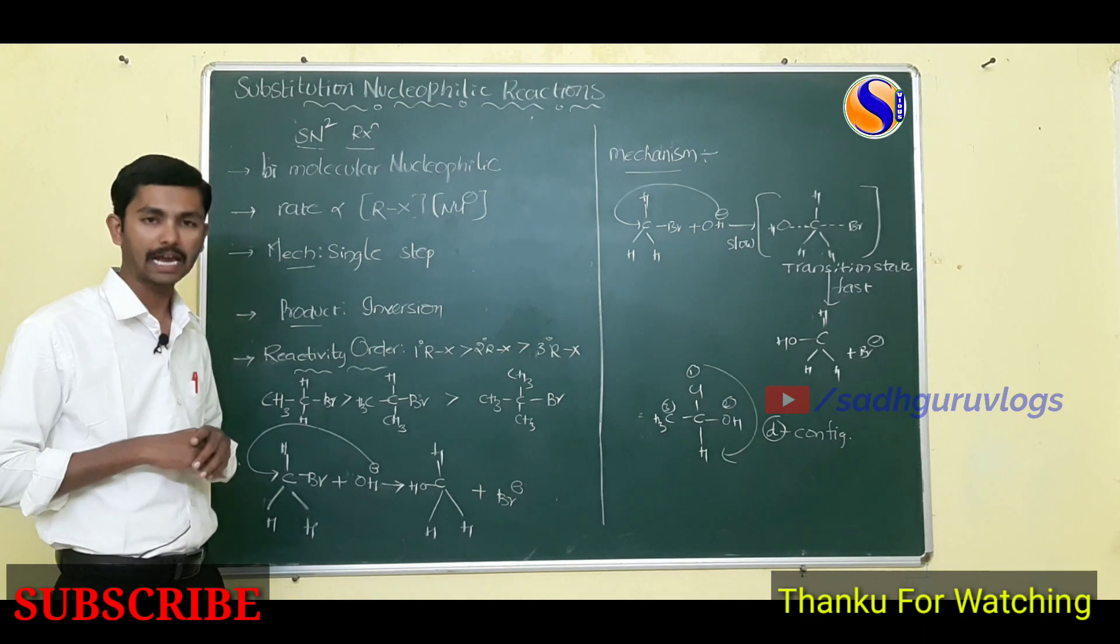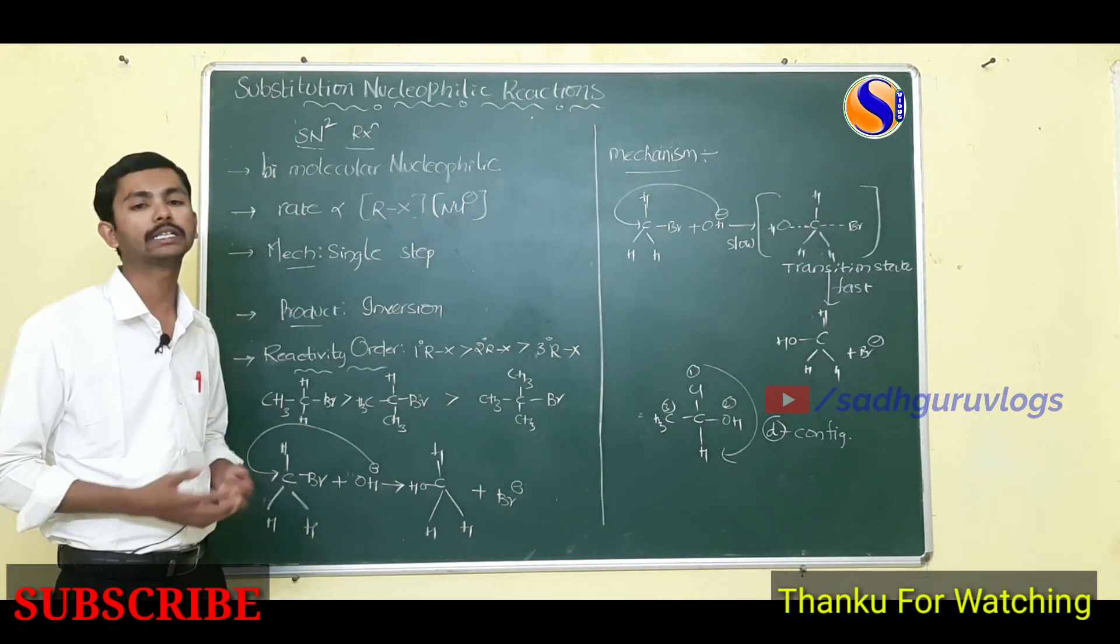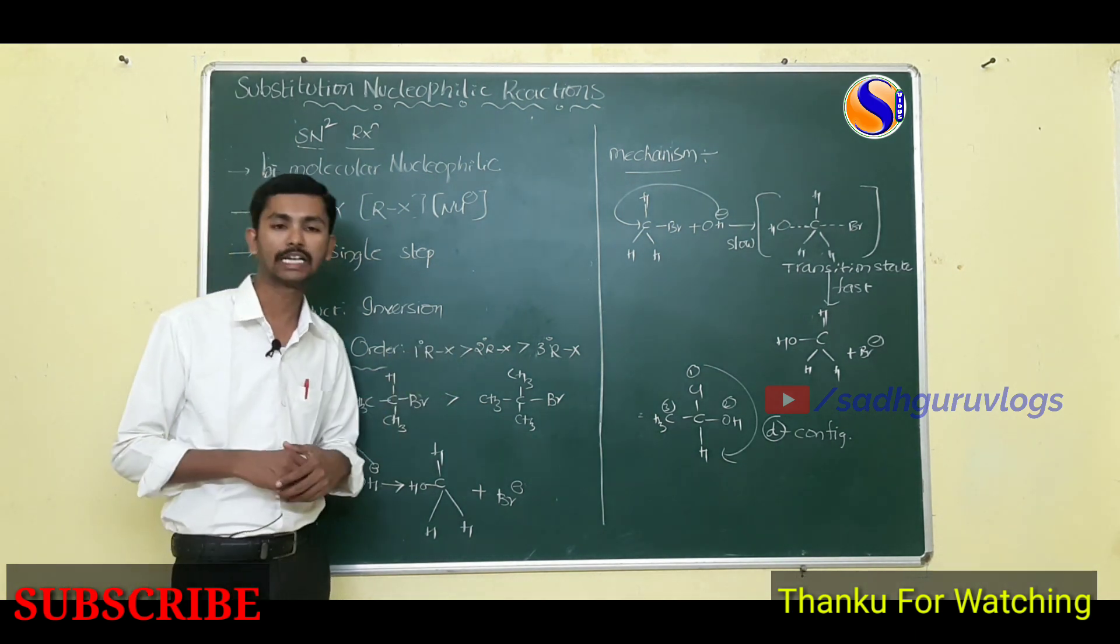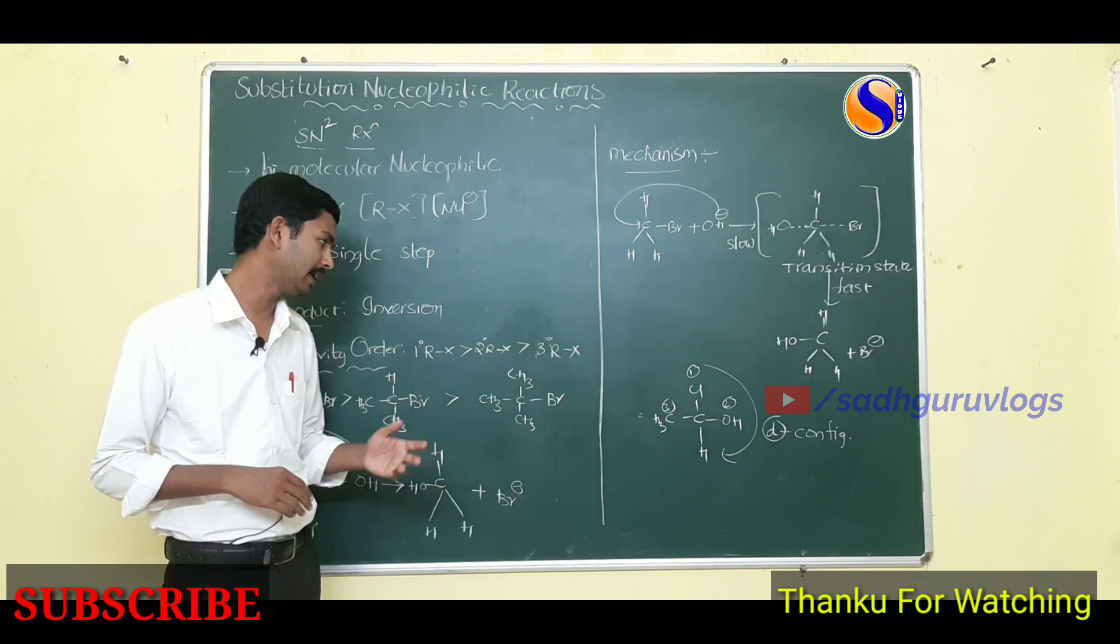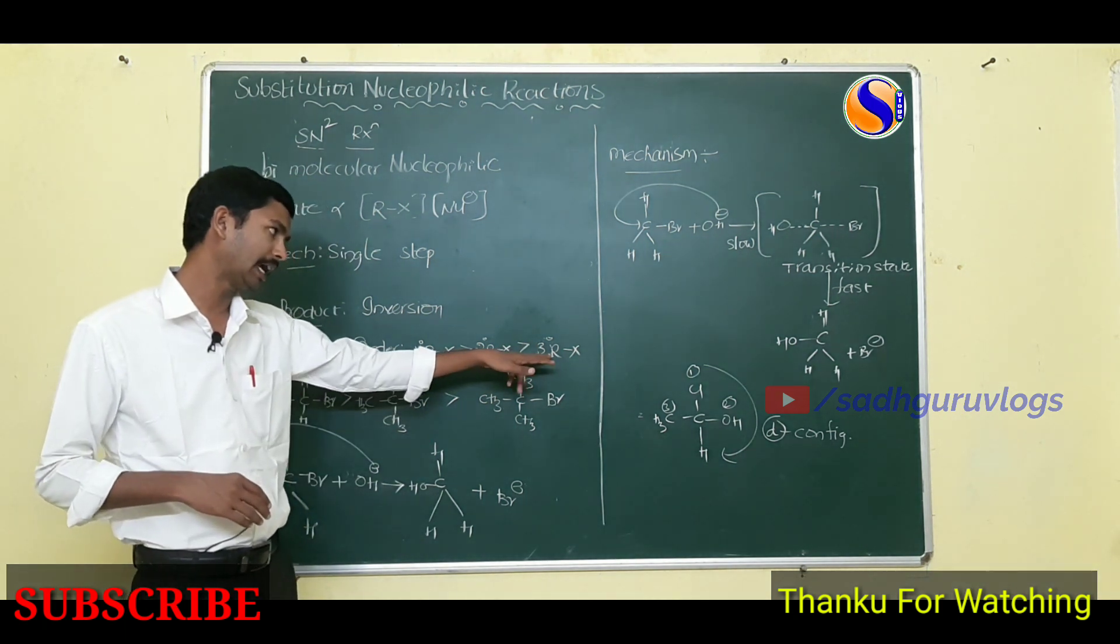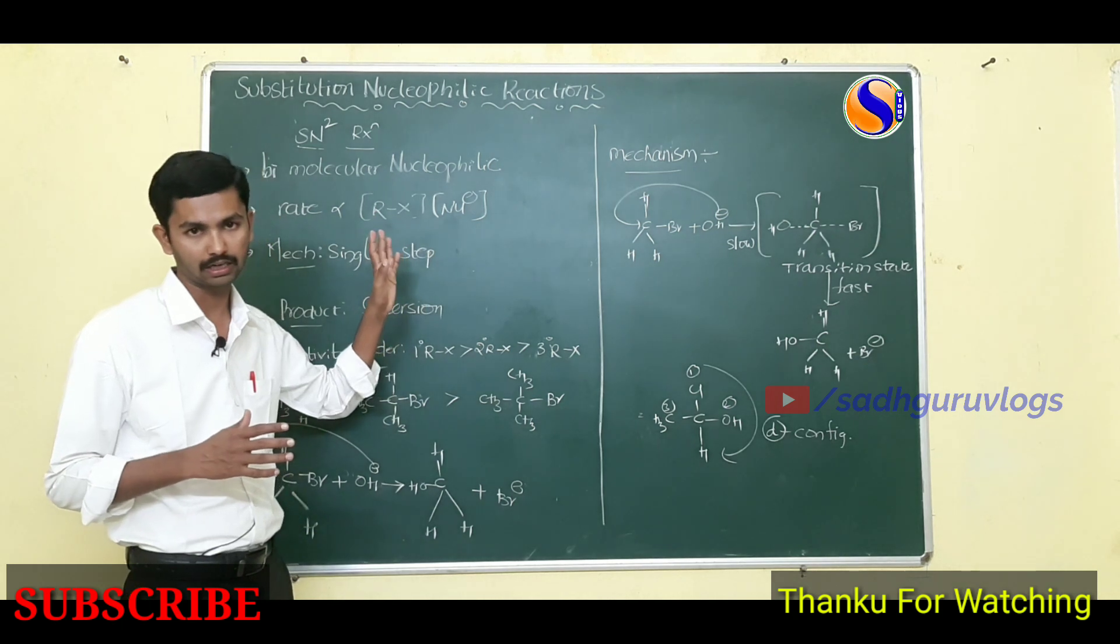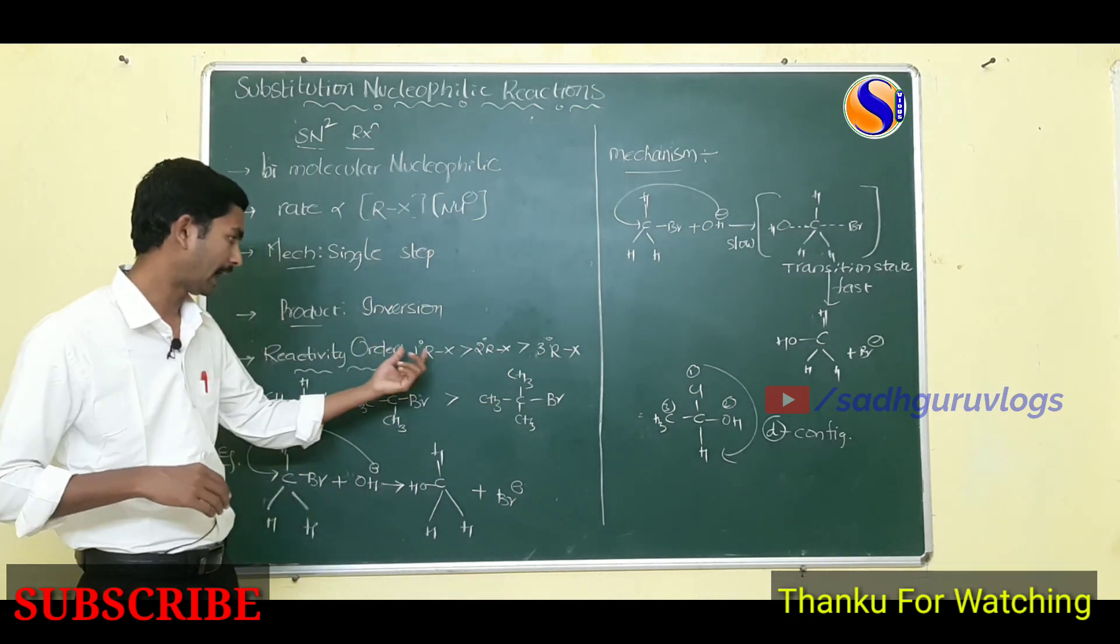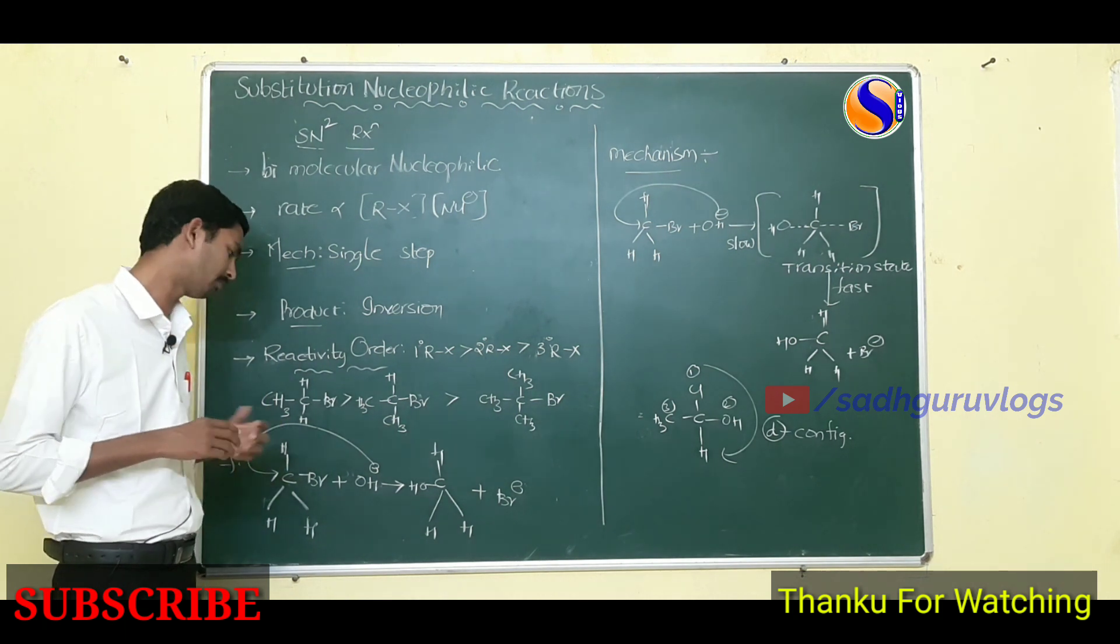SN2 reactions reactivity order is primary alkyl halide showing more SN2 reactions when compared to secondary alkyl halide and last tertiary. Why? The carbocation is very much stable, that's why it's not involved in the SN2 reactions. Primary alkyl halide does not easily form the carbocation.